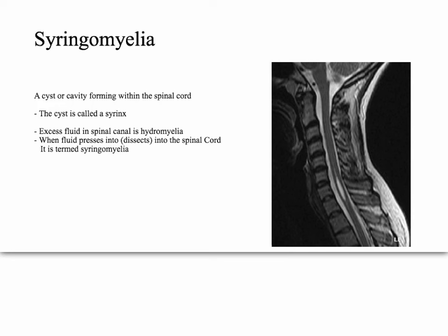Let's take a quick look at what syringomyelia is. It's defined as a cyst or cavity that forms within the spinal cord. We have a picture here — this cyst, this cavity, formed within the canal of the spinal cord. If you just have excess fluid in the spinal cord, it's called hydromyelia. But whenever that fluid presses into and dissects into the spinal cord, it's syringomyelia.